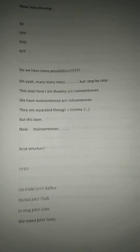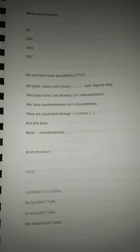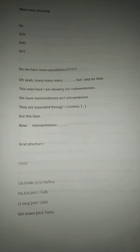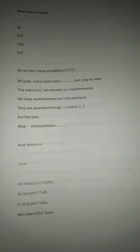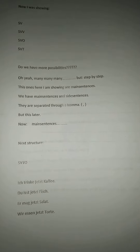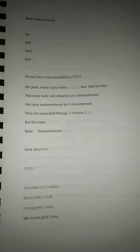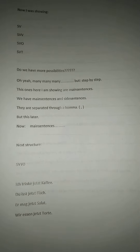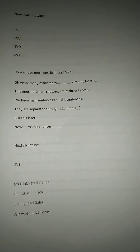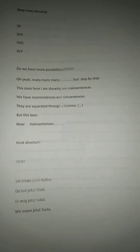We are starting at the very beginning. I told you: subject-verb, and maybe subject-verb-verb, or maybe subject-verb-object, or maybe subject-verb-time. These are the shorthand notations I am using: SV, SVV, SVO, SVT. And you can see here already written down: 'ich trinke jetzt.'